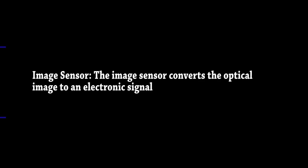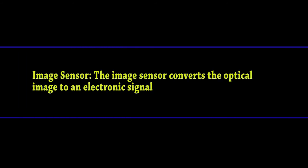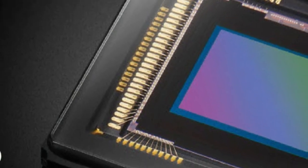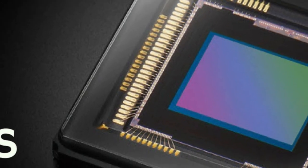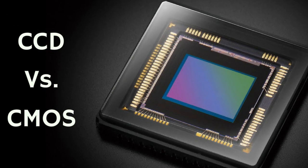Image sensor. The image sensor converts the optical image to an electronic signal, which is then sent to your memory card. There are two main types of image sensors used in most digital cameras: CMOS and CCD.